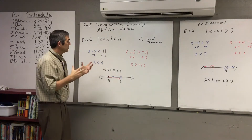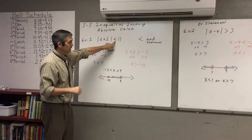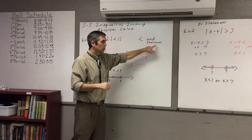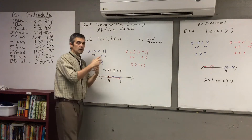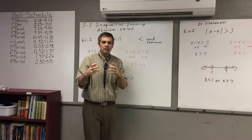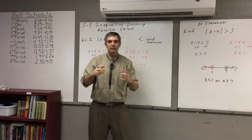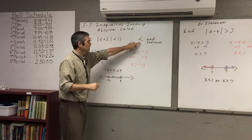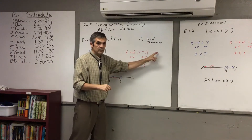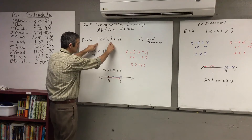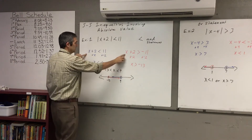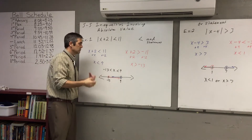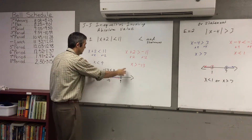When we look at our inequalities, when you have less than, you have an 'and' statement. So we're dealing with it kind of like compound inequalities — basically combining compound inequalities with the absolute value. When you have less than, you end up with an 'and' statement, and when you have this absolute value you're going to split it and create two different inequalities, giving you these compound inequalities.